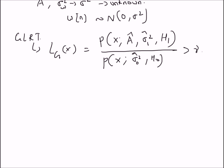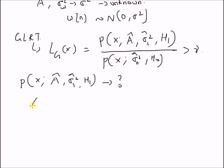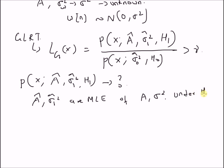The key difference between the generalized likelihood ratio test and the normal Neyman-Pearson test is that in the Neyman-Pearson test we basically know the parameters A and the noise variance sigma squared. Here, the goal becomes estimating the probability distributions, so for the alternate hypothesis we need to find the distribution of x using estimates of the unknown parameters A and sigma squared.